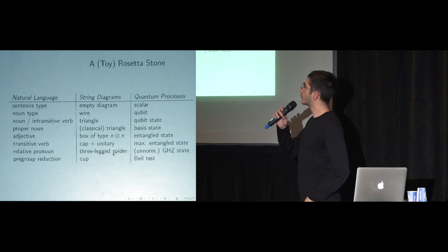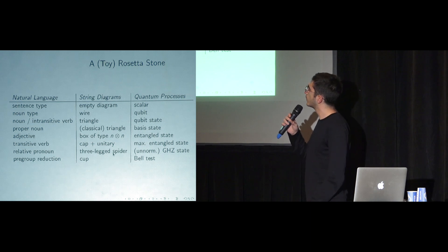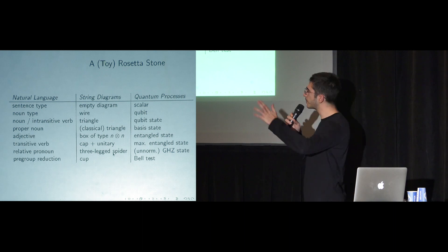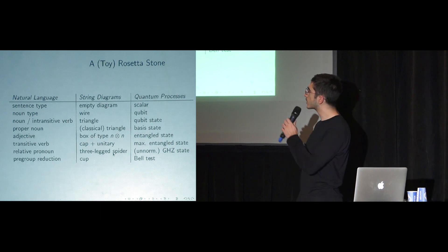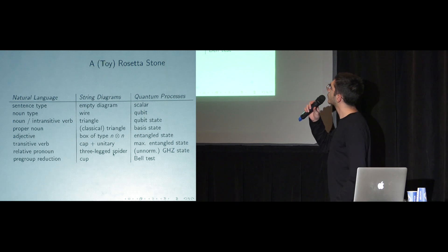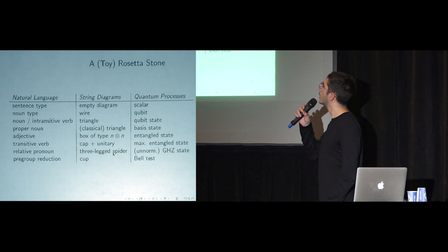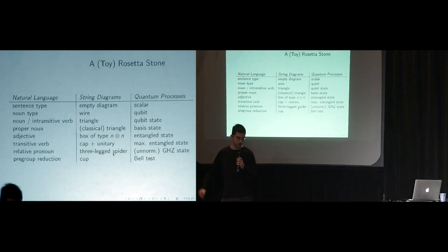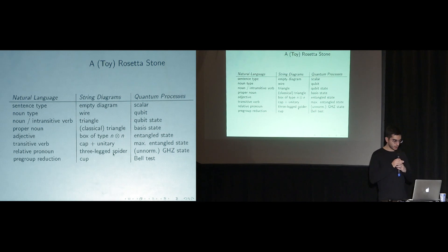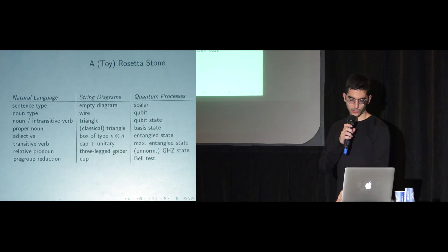Our dictionary: the goal is to go from natural language to string diagrams. A sentence type maps to a scalar — the empty diagram. A noun maps to a wire. A wire gets mapped to a qubit — every one of these wires would be a qubit wire line, like the standard circuit language. For every type, we have a particular dictionary from natural language types to string diagrams to circuits.